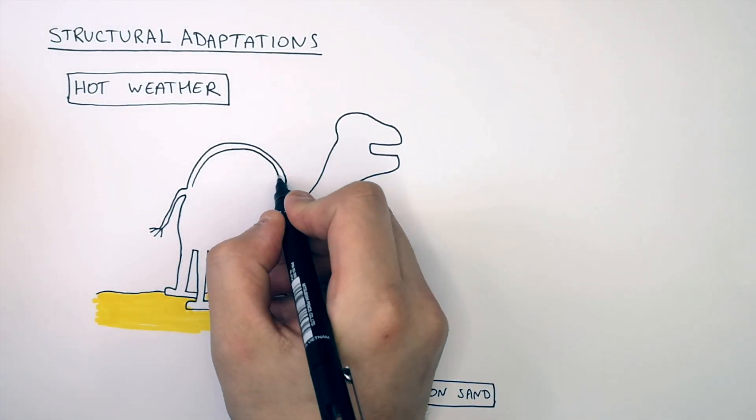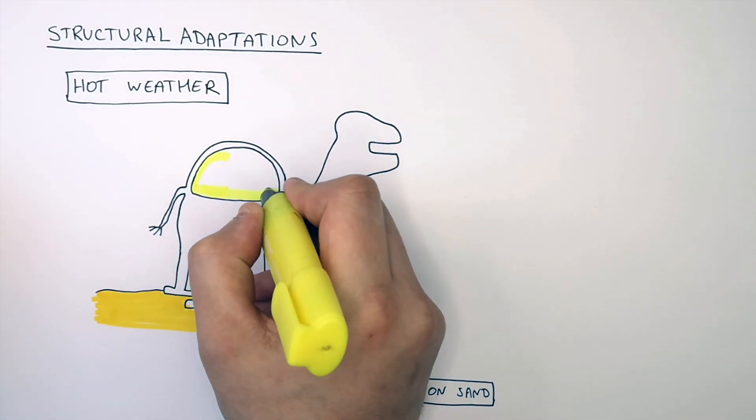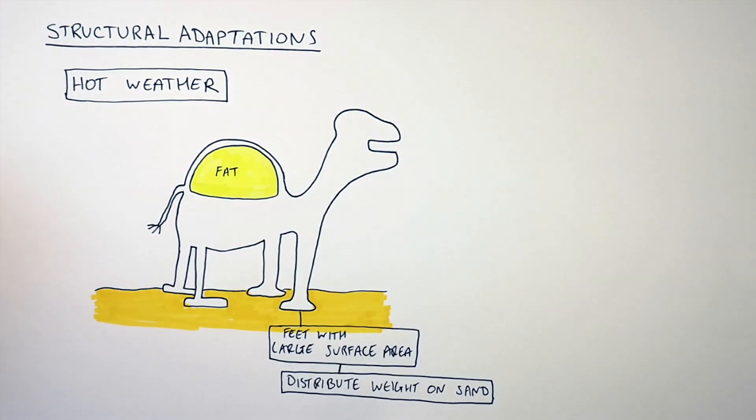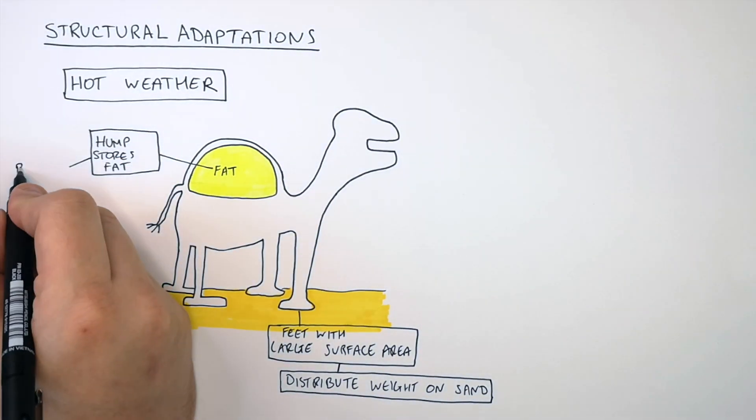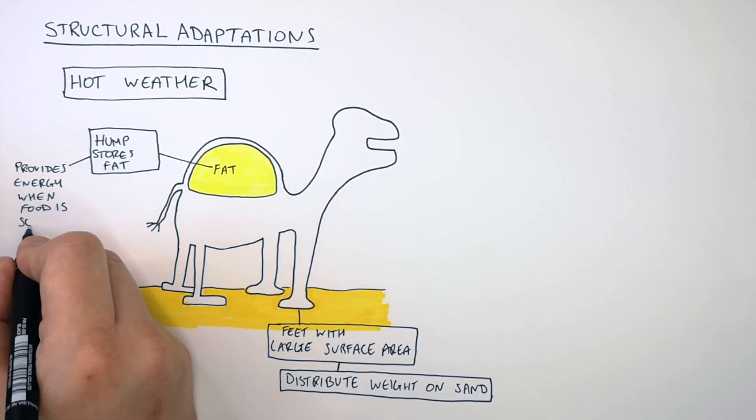Camels do not store water in their hump. They store fat in their hump. And this fat provides energy when food is scarce.